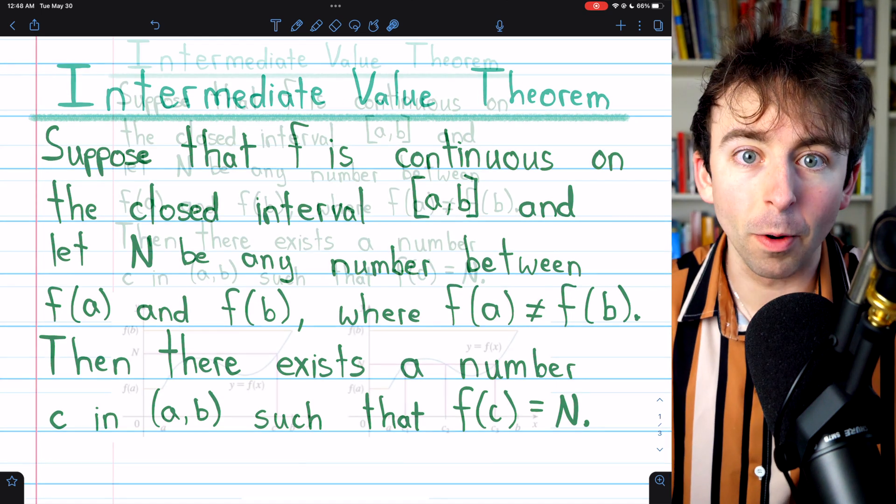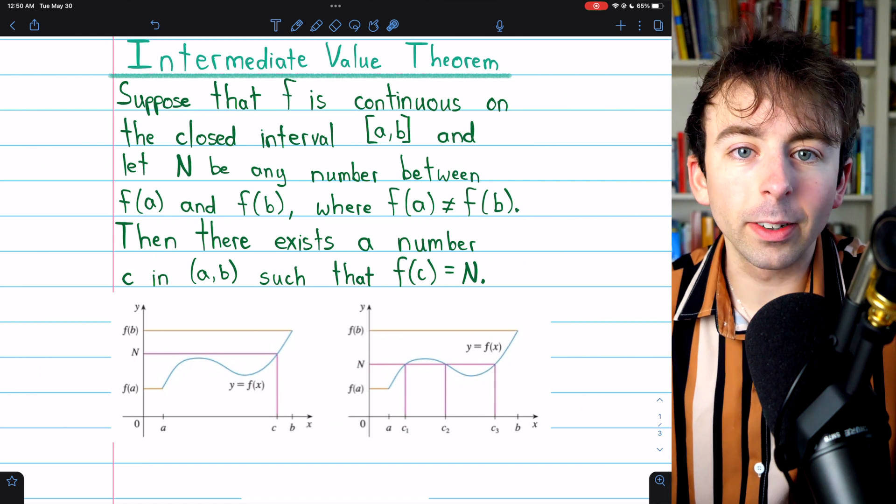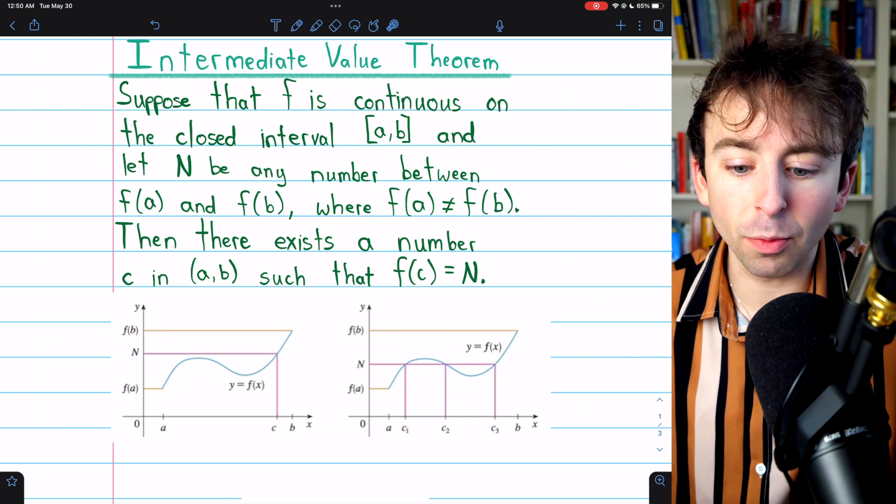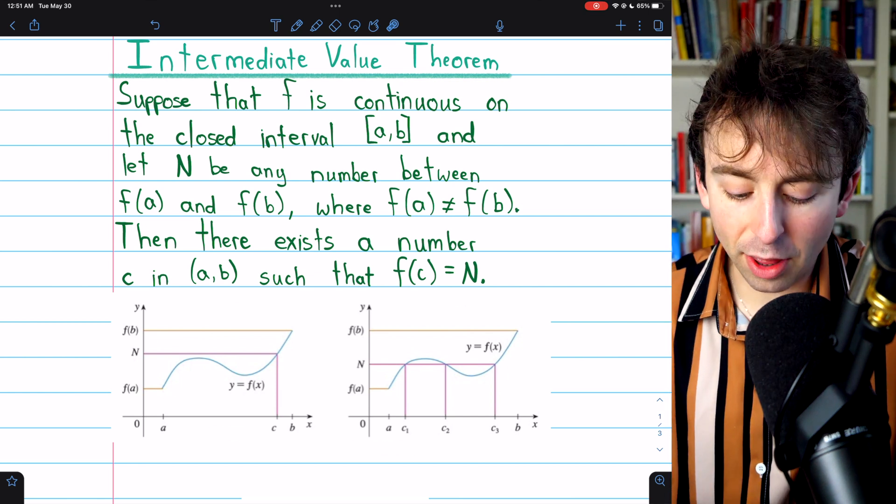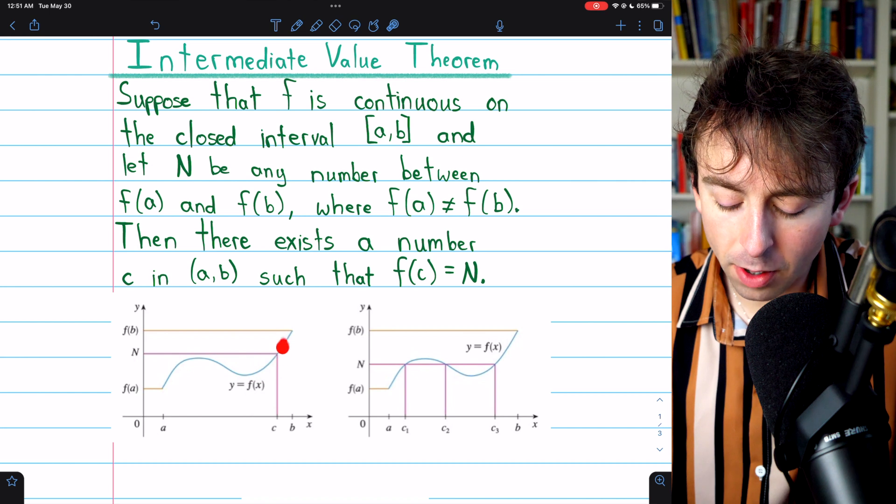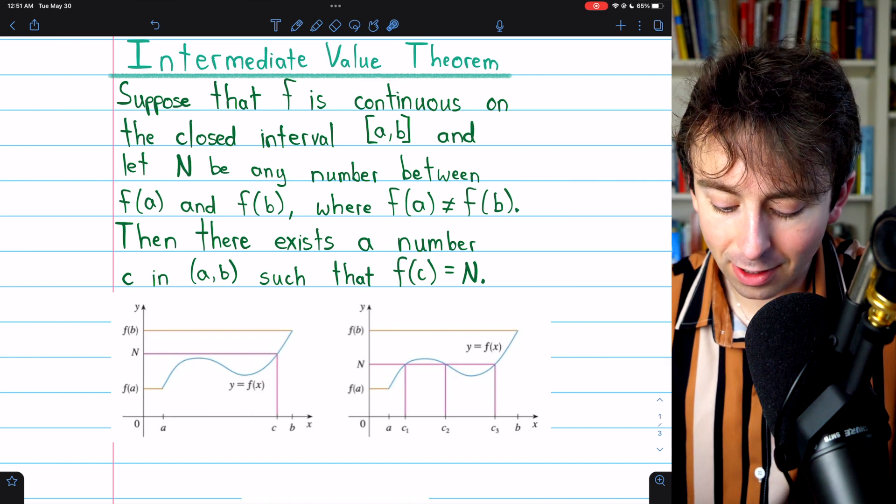That's the theorem. Proving the IVT is outside of the scope of a Calculus 1 course, but I hope you'll agree it's plausible. Here are a couple pictures from Stewart's calculus showing the theorem in action. We've got this continuous function, f(x), from a to b.